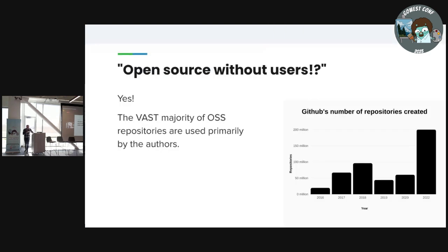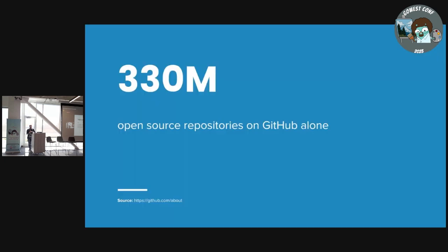You might say, 'What are you talking about? Open source without users doesn't even count.' And you're kind of right. But honestly, the vast majority of open source projects don't really have users other than maybe the author, and even then they tend to get abandoned. I don't use more than half of my own open source projects anymore. There's over 330 million repositories on GitHub, and that's growing super fast compared to the number of developers.